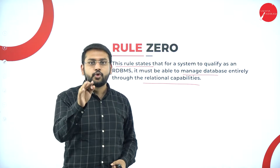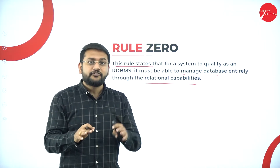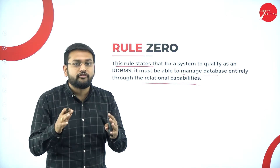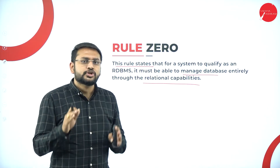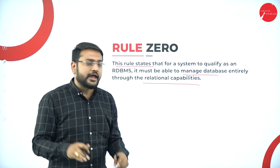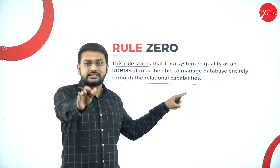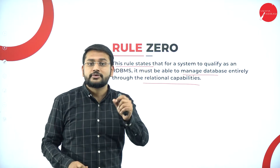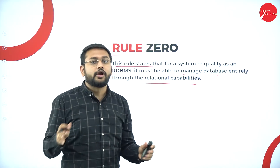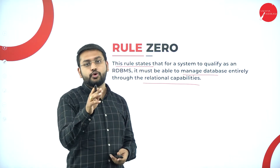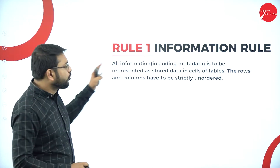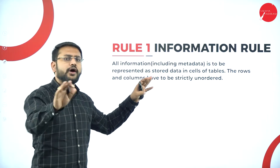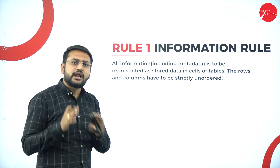To repeat: Rule Number Zero says if it has to satisfy or qualify whatever it is managing, it has to manage with the relational capabilities — that is what Rule Number Zero says according to Codd's rules. Now Rule Number One is the Information Rule: whatever you are storing in a database or in a table, it should be in the form of rows and columns.